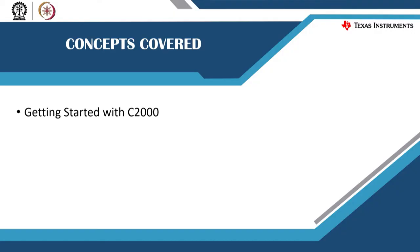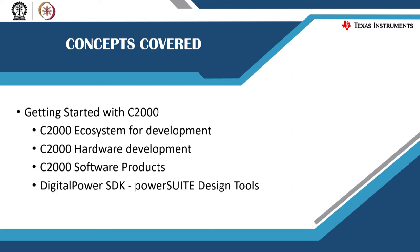The concepts we are going to cover in this lecture are primarily focused on getting started with C2000. We are going to look at the C2000 ecosystem for development — what kind of hardware and software boards are available. We are also going to look at how to build your own digital power, the digital power SDK, and power suite design tools. Finally, we are going to briefly touch upon the support available through the E2E forum and the C2000 Academy.